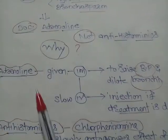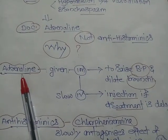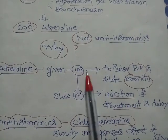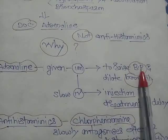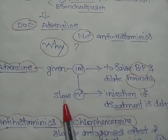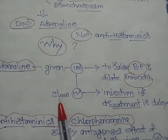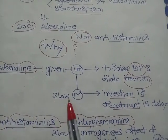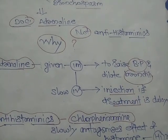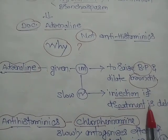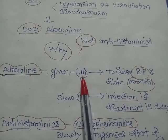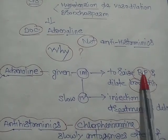Adrenaline is given intramuscularly to raise the blood pressure and to dilate the bronchi. If treatment is delayed and anaphylactic shock has developed, adrenaline is given as a slow intravenous injection. So adrenaline is the drug of choice given intramuscularly to raise BP and dilate the bronchi.